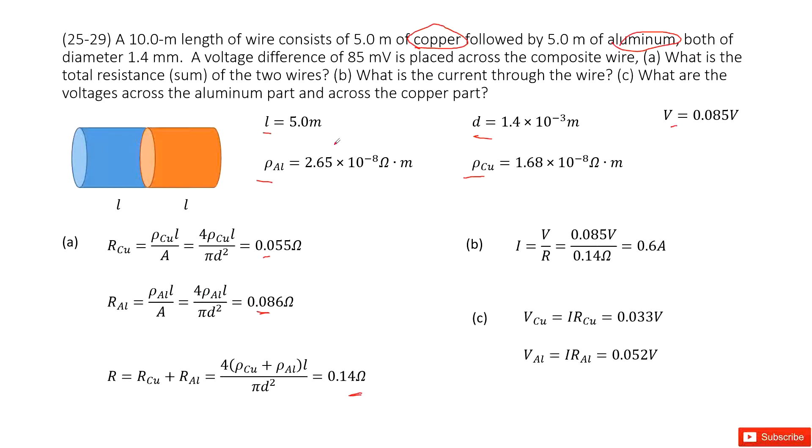Next one, what is the current that goes through this wire? As we talked about, the voltage is given. From Ohm's law, you can use the voltage divided by resistance to get the current. So input all the given quantities, get the answer there.